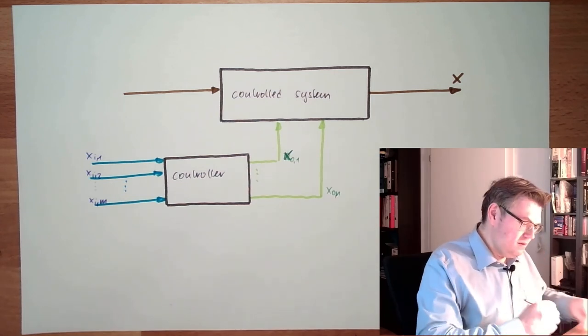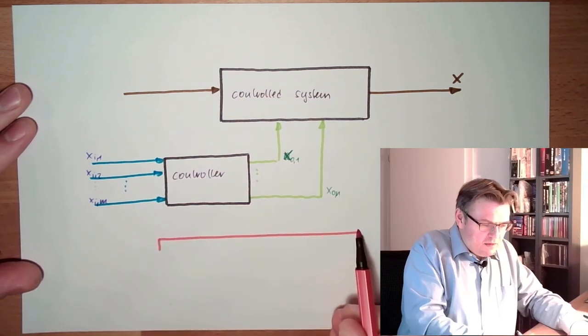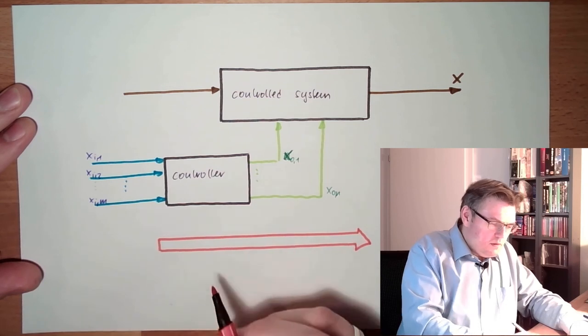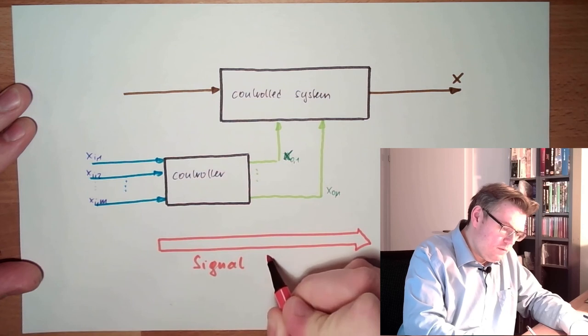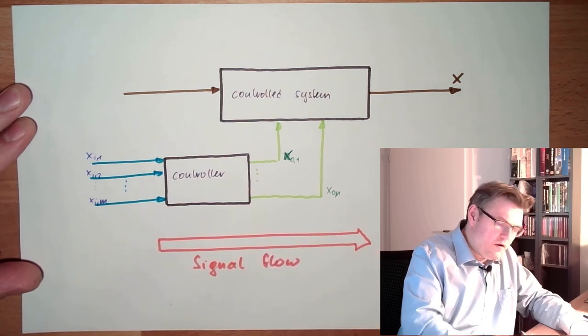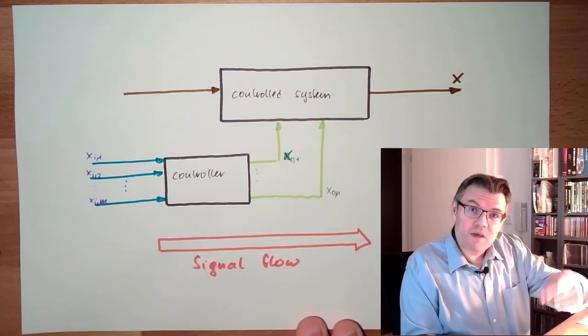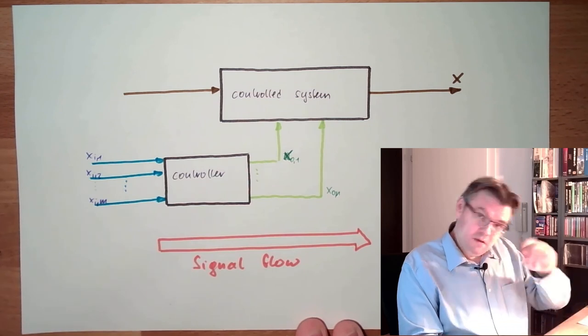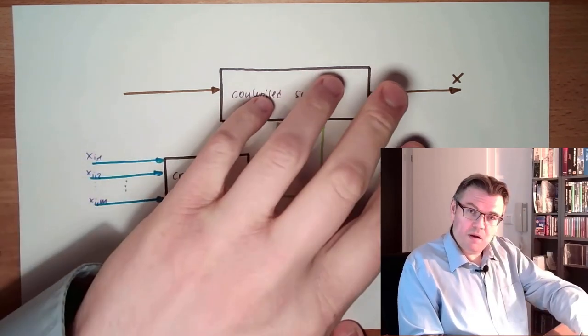So, there is a signal direction. This signal direction is simply from left to right. It's the signal flow here. There is no feedback. This would then be, if the controller is indeed checking if the output is correct, then this would be feedback controlled, other video series. Here, we are talking about this.